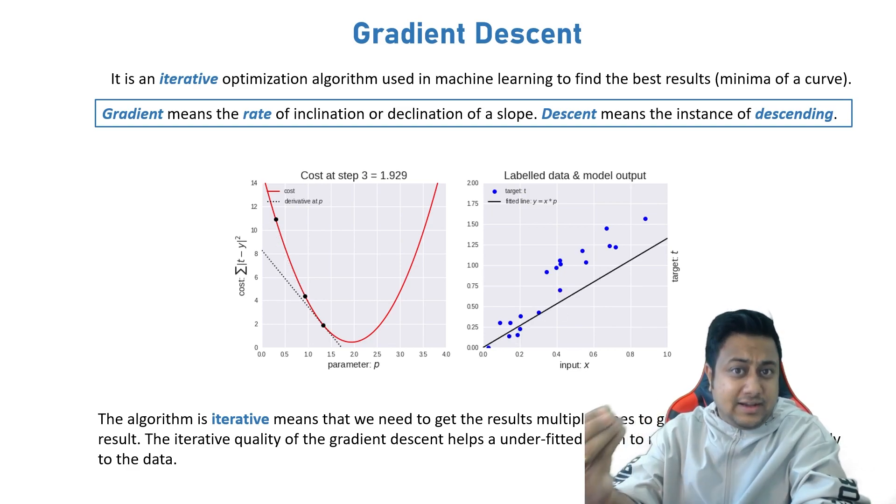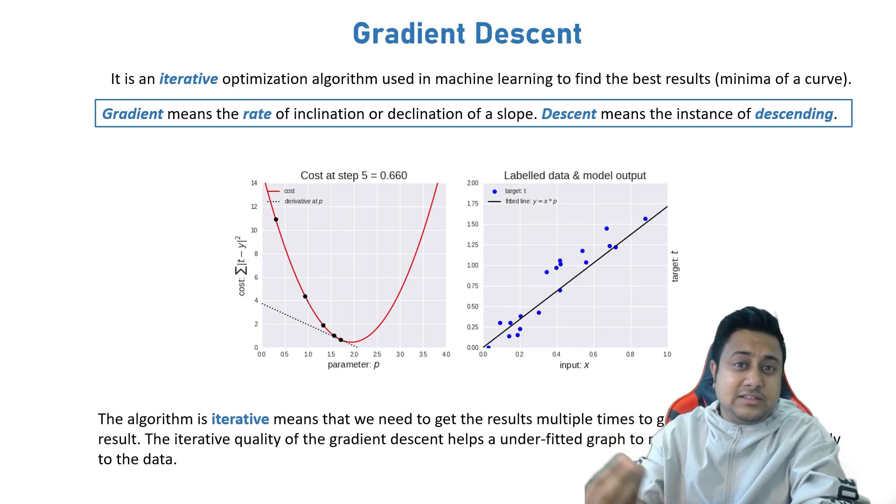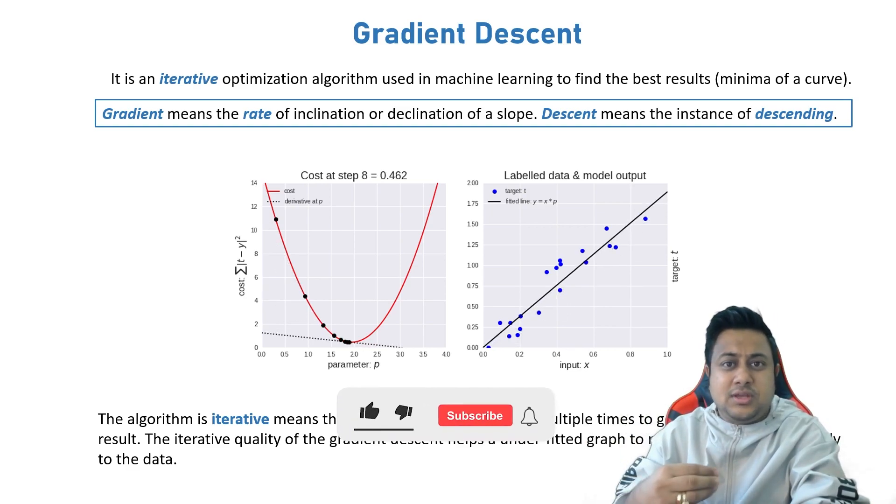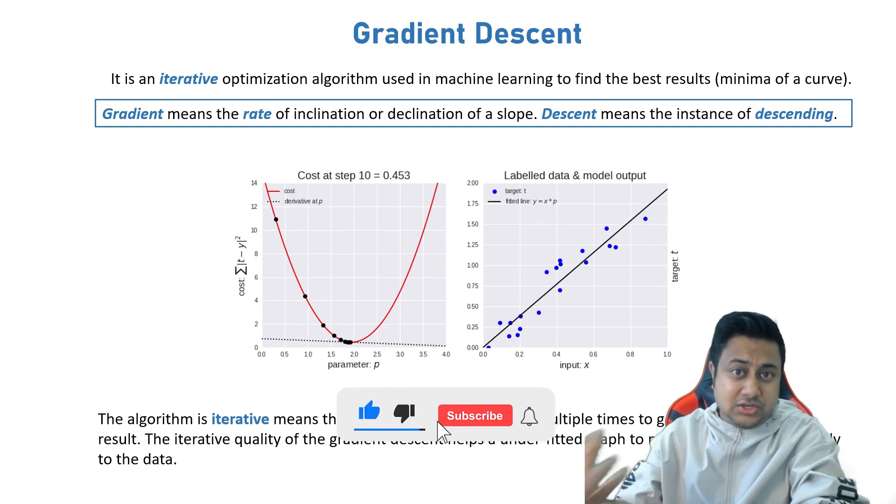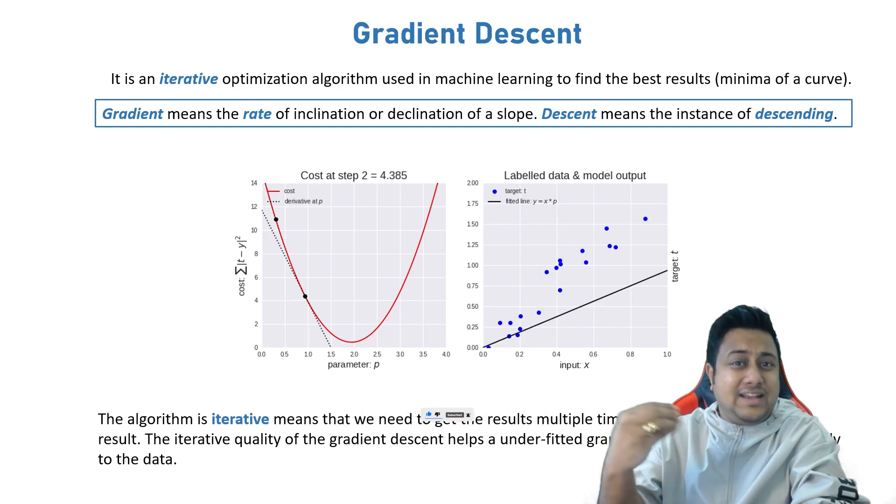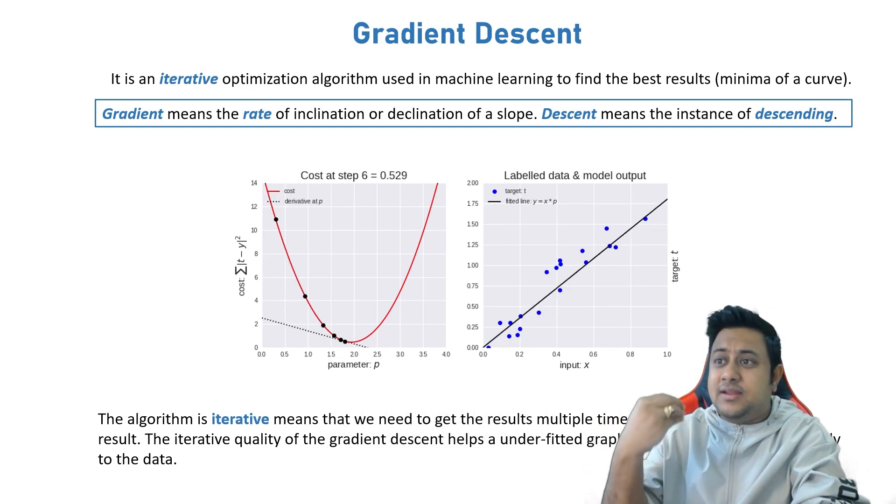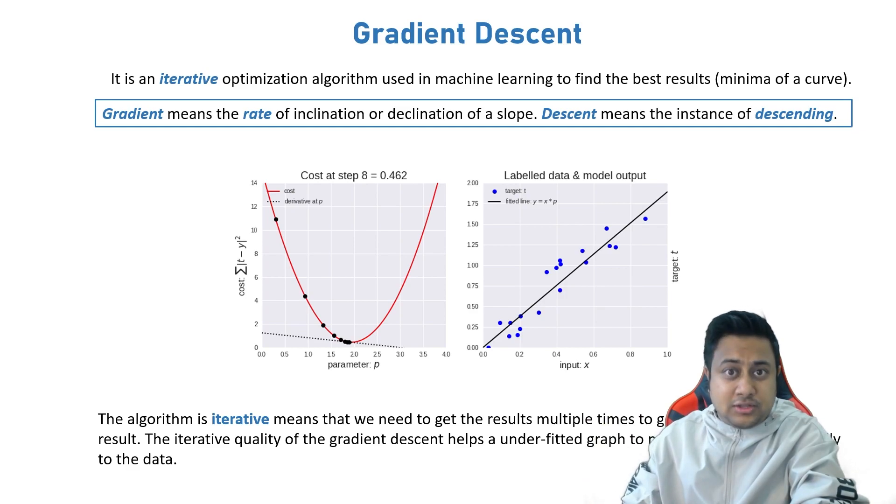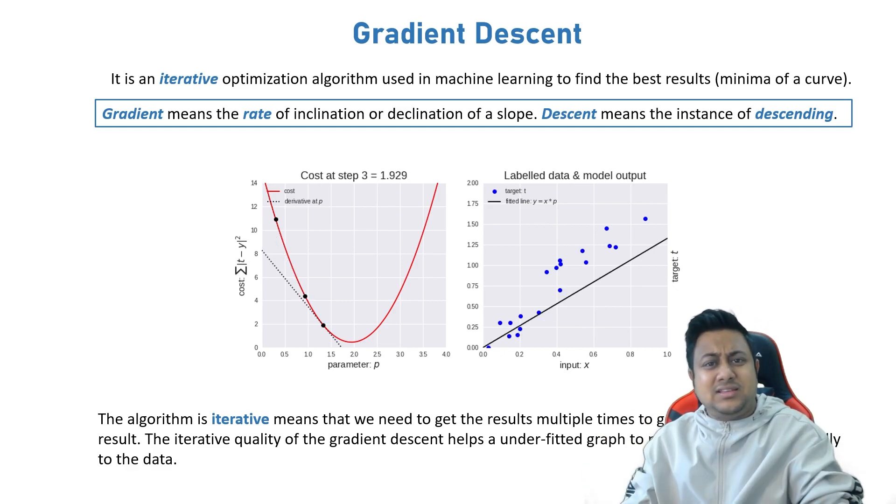So let's get started. Now we'll talk about gradient descent. Gradient descent is one of the topics which many people might have known in machine learning and deep learning. Gradient descent is nothing but an iterative optimization algorithm used in ML to find the best results or minima of a curve.